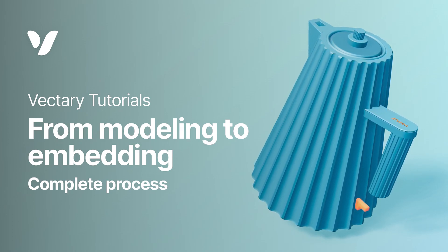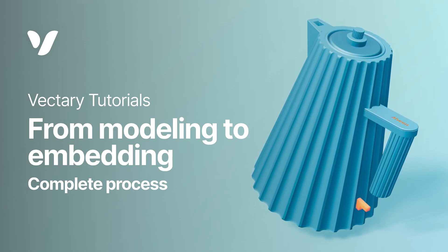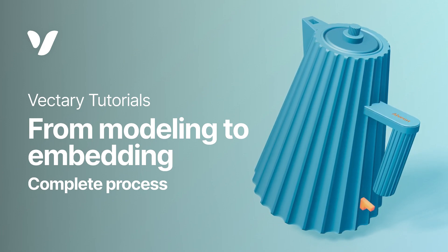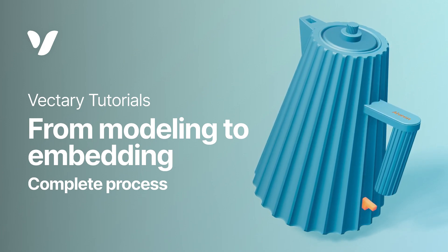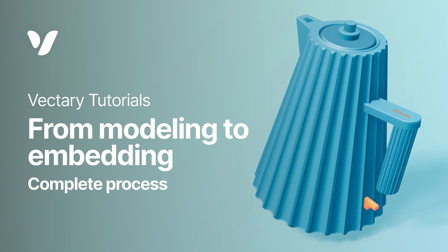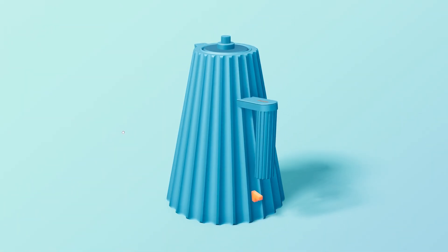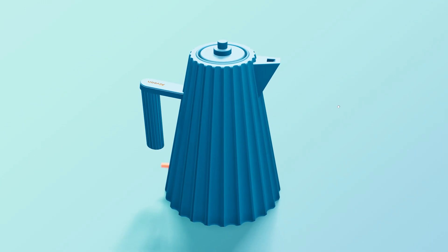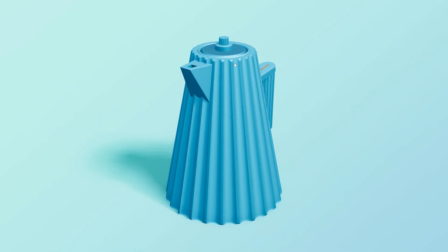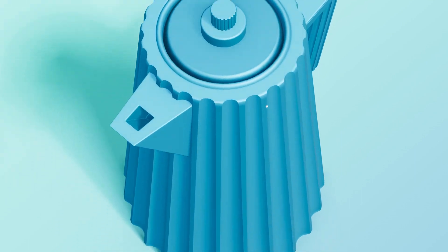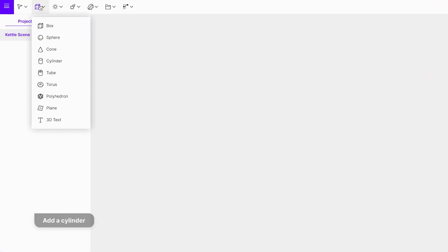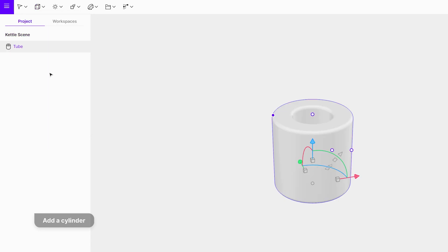Hello everyone. In this tutorial we're going to cover several different topics: how to set up an easy but efficient scene with only one light, how to set up several boolean operations and create the whole product in just a few simple steps. At the end we will work on scene optimization to prepare it for sharing on the web and get it in augmented reality. Let's set up the environment and the lighting first before we get into modeling.